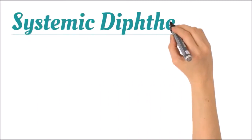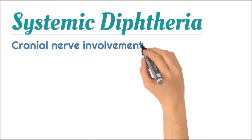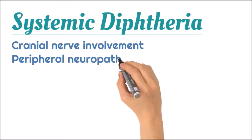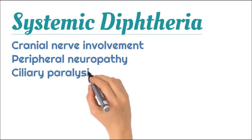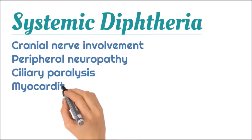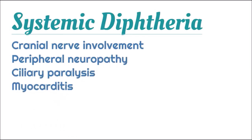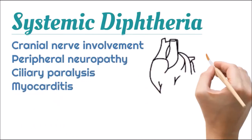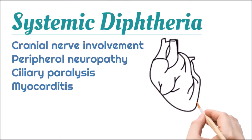Now we will discuss about systemic diphtheria, in which there is cranial nerve involvement, peripheral neuropathy, ciliary paralysis in the eye, and myocarditis, meaning inflammation of the heart muscle.